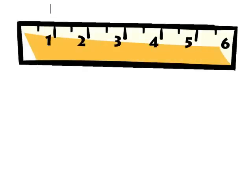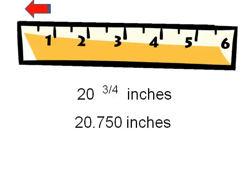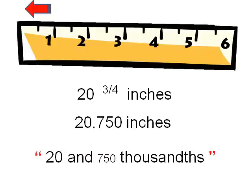So far, we've only been using numbers that are less than one inch, but remember, they can be combined with any whole number. For example, 20 and three-quarter inches can be written in decimals as 20.750 inches, and it would be stated as 20 and seven-hundred-and-fifty-thousandths inches.